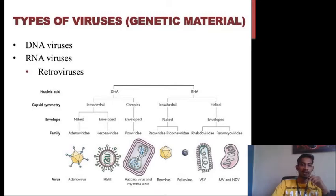In the complex category of DNA viruses, the next classification is enveloped, and the example of this category of viruses is poxviridae. In the icosahedral category, the types are naked and enveloped. The example of naked icosahedral DNA viruses is adenoviridae, and the example of enveloped icosahedral DNA viruses is herpesviridae.